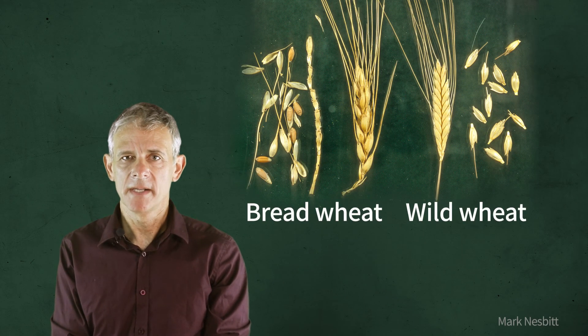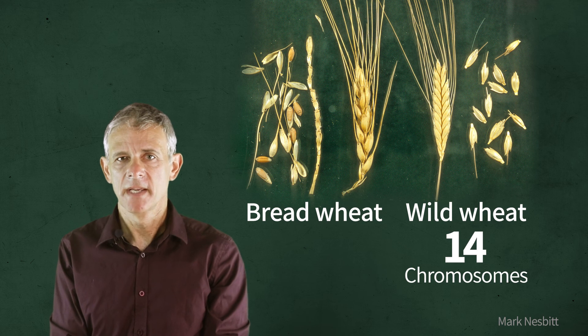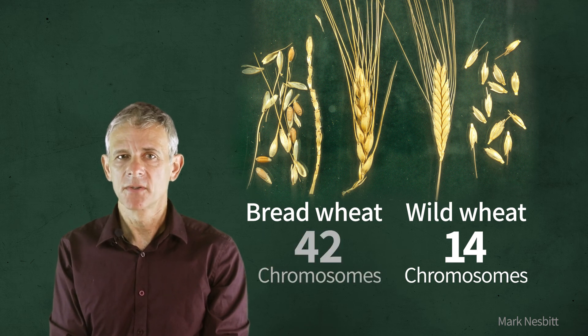Sometimes, mainly in plants, hybrids can form new species. For example, the wheat we eat is a hybrid that was formed by two hybridization events from three different species. The original wild wheat has 14 chromosomes, and the wheat we eat now has 42 — three times as much.